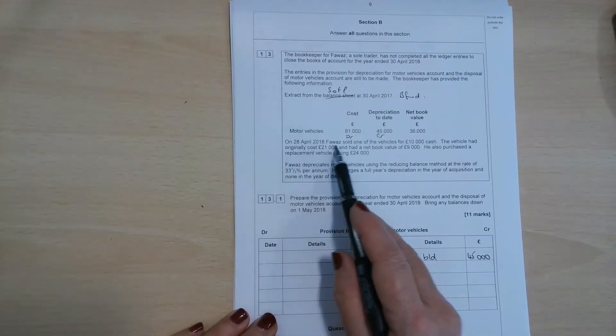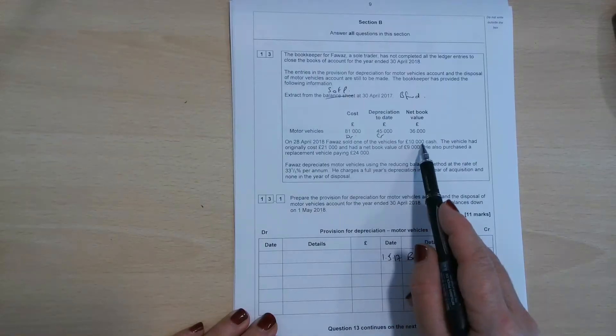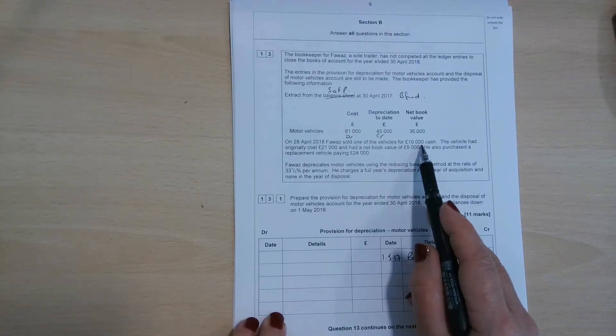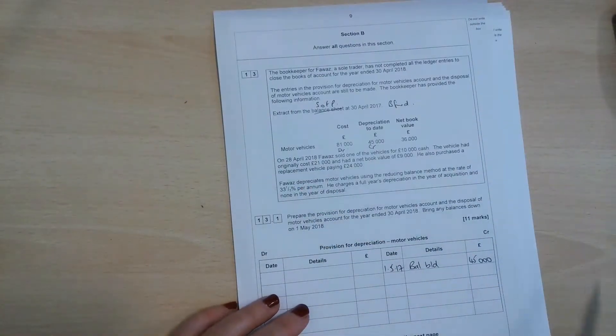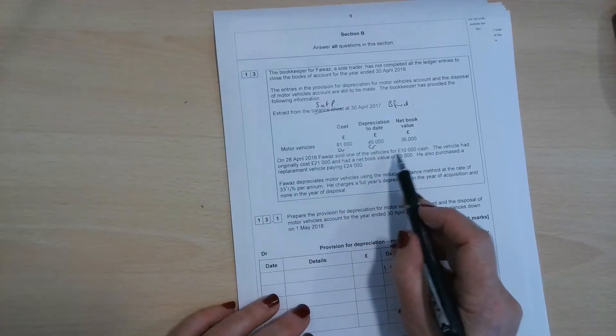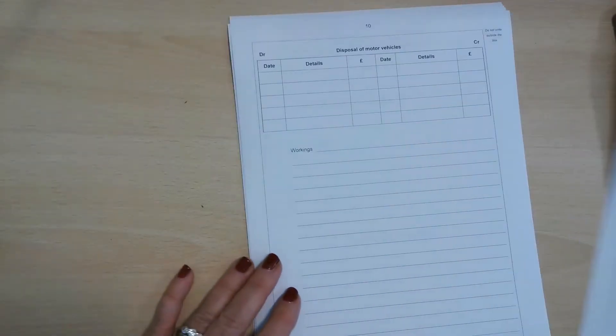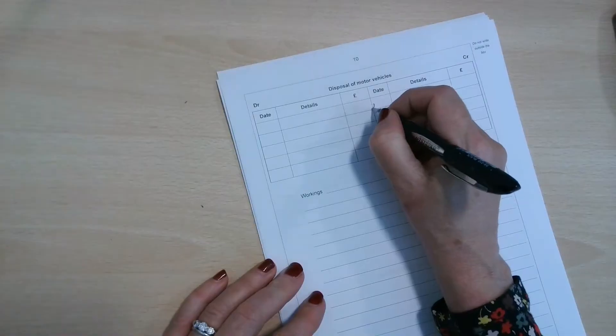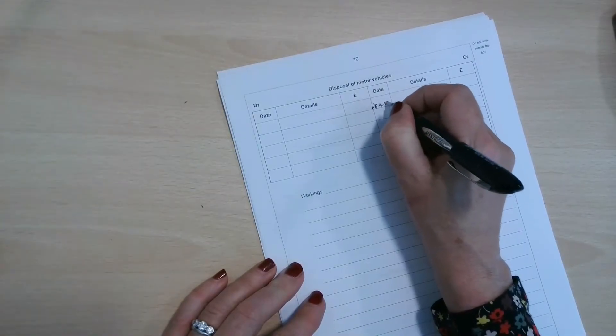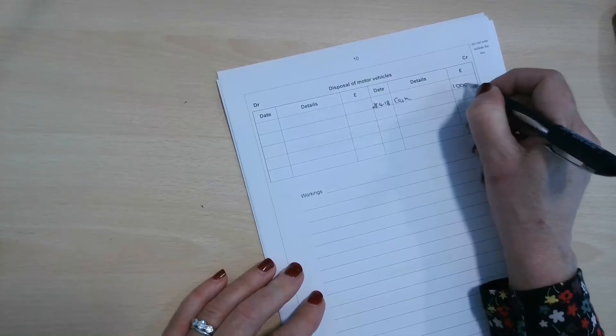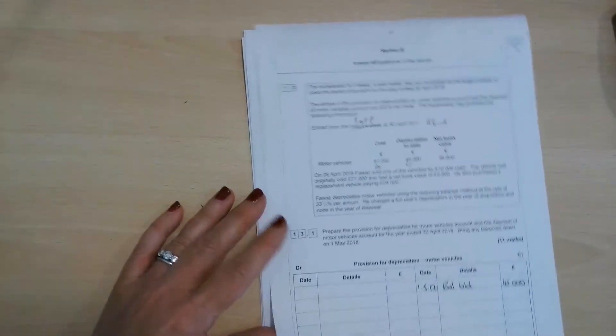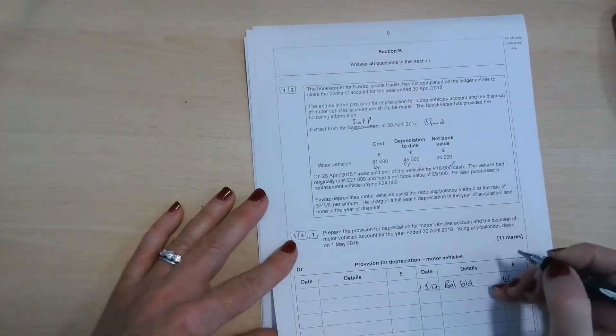On the 28th of April 2018, FOWAS sold one of the motor vehicles for £10,000 in cash. So that's going to be part of the disposal account. So we could pop that into the disposal account now. So let's just check the date, 28th of April 2018. So the double entry for that is to debit the cash account and credit the disposal of motor vehicles. So that's the sale proceeds. £10,000 in cash has been received there. So that's that one dealt with.